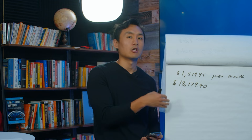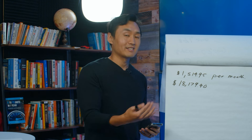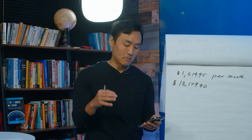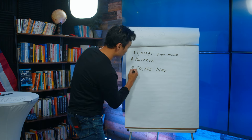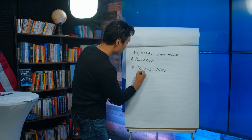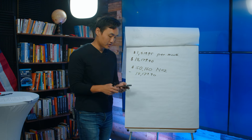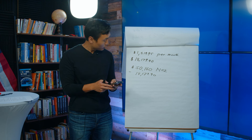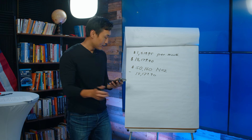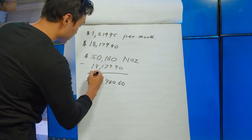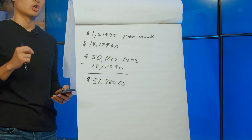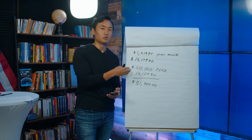Cash flow is the money you take home after all operating expenses and debt service have been paid. We take our NOI of $50,160 and subtract annual debt service of $18,179.40: $50,160 − $18,179.40 = $31,980.60. That is the cash flow we took home every single year as owners of this eight-unit property.